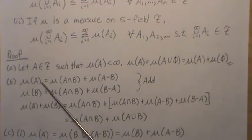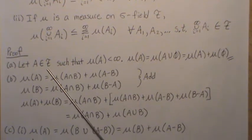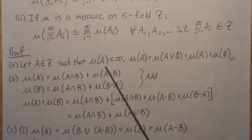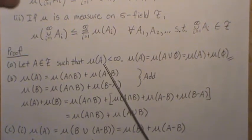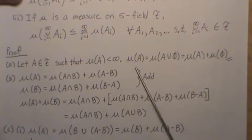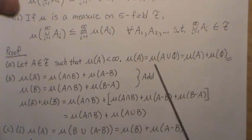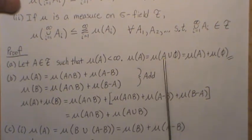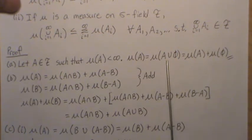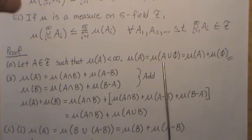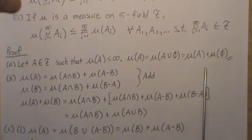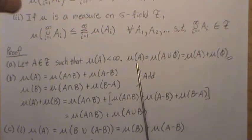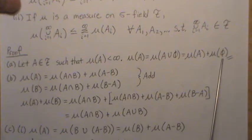Let's go through the properties. Let A be in the field F such that mu of A is less than infinity — so it's a finite set function. Then mu of A equals mu of A union the empty set, which is still A, but since it's finitely additive, it's the addition of the individuals. We have mu of A equal to mu of A plus mu of the empty set, so subtracting, we get mu of the empty set equals zero.